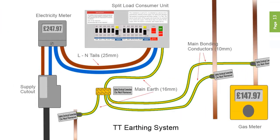TT means terra-terra or earth-earth. This is where no earth conductor is provided by the distributor, and the consumer relies on the actual physical earth to provide the earth protection for the installation, usually through the use of earth rods. Often encountered in rural areas and fed from overhead cables. It's easy to spot, as it requires the installation of an earth electrode or earth rod at the consumer side.